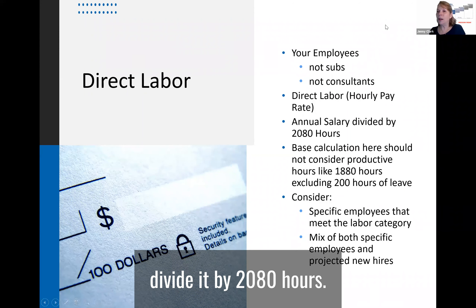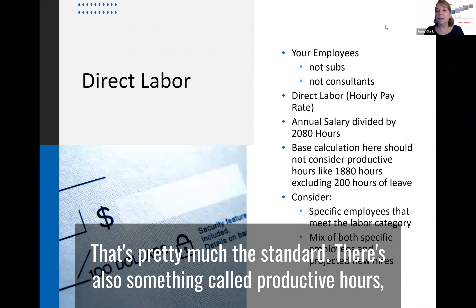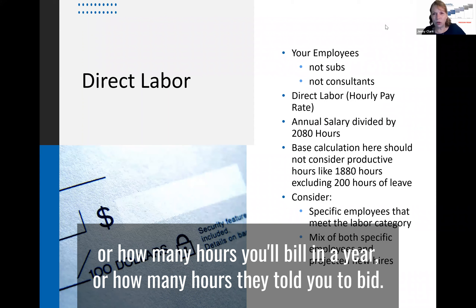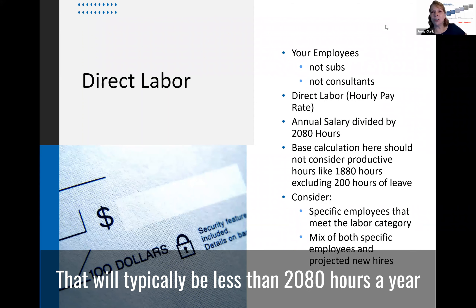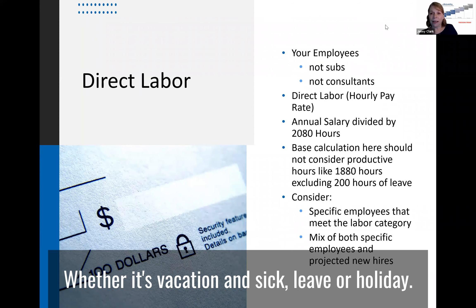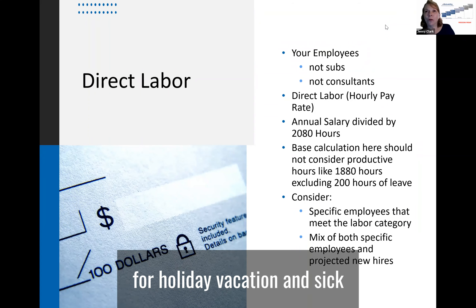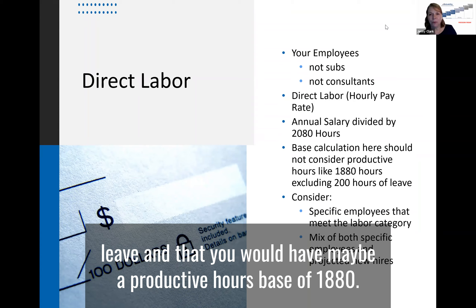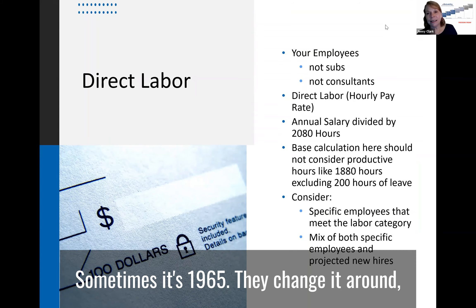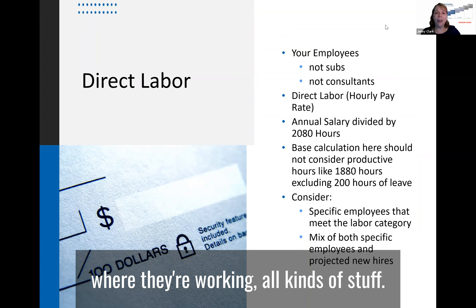You take their annual salary divided by 2,080 hours — that's 52 weeks a year times 40 hours, which is the standard. There's also something called productive hours, or how many hours you'll bill in a year. That will typically be less than 2,080 hours because it allows for paid time off — vacation, sick leave, and holidays. A rough estimate would be to take off a couple hundred hours, giving you a productive hours base of around 1,880. Sometimes it's 1,965 — it depends on the contract and work schedules.